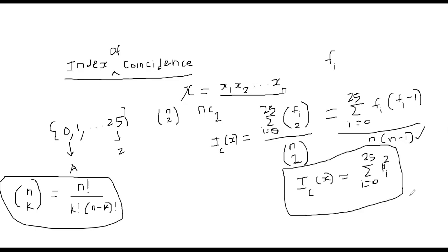What is p_i? p_i is nothing but f_i by n. That is clear from the definition of probability. f_i is the frequency, n is the total length or total number of occurrences of all the characters.